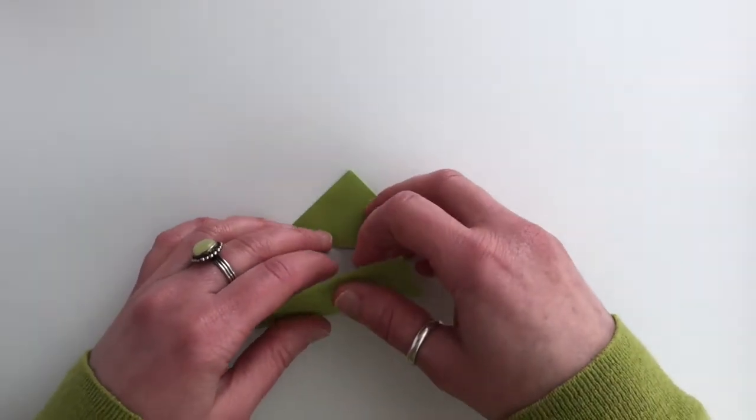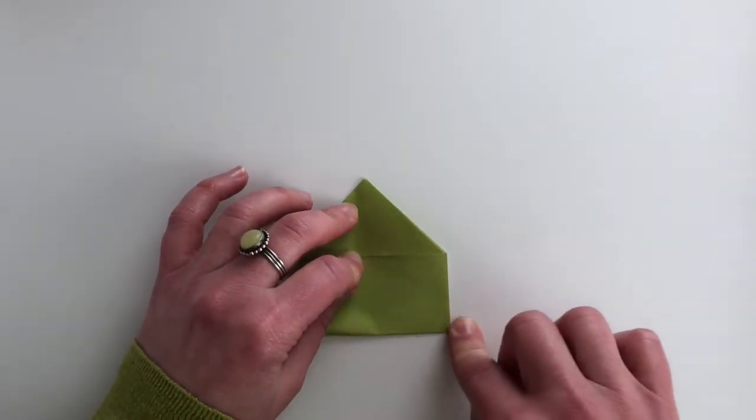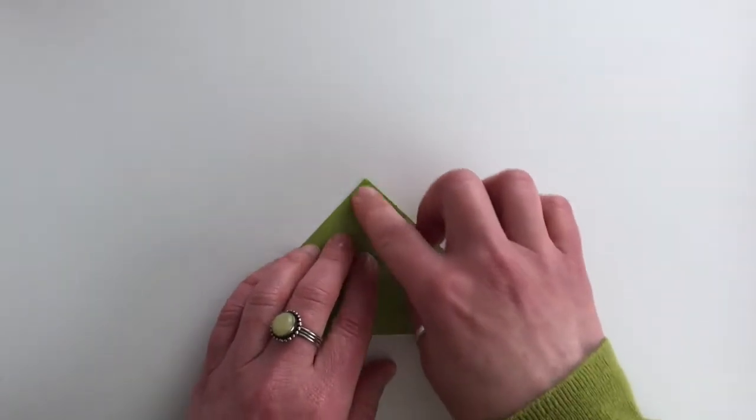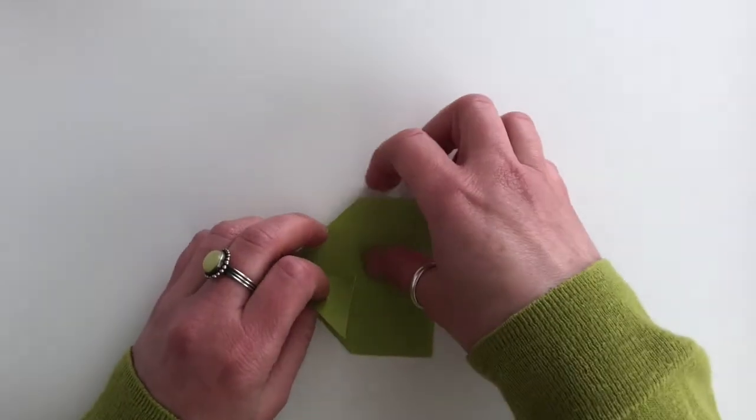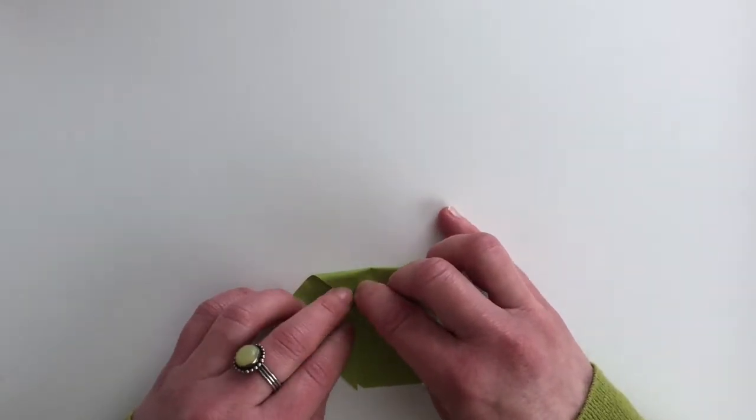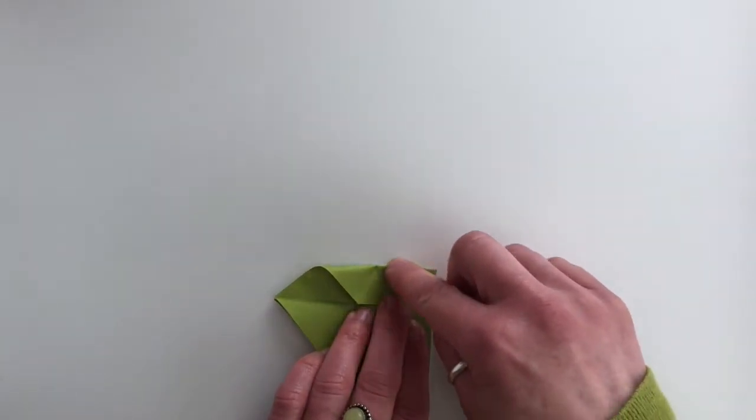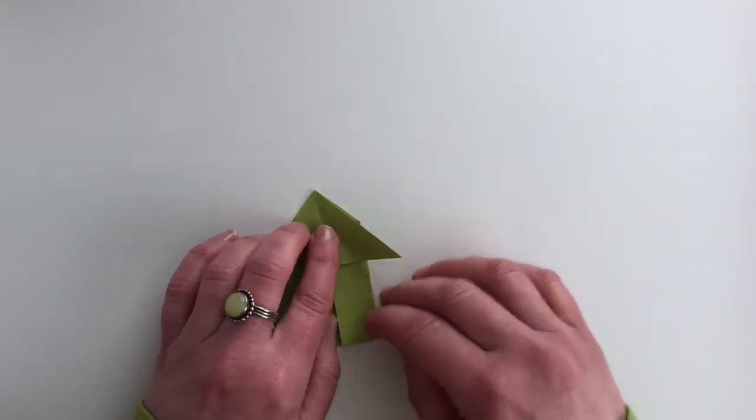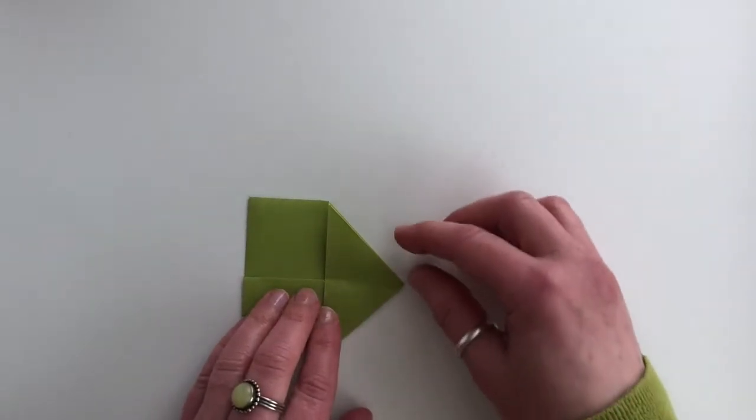Take the bottom edge and fold it up to meet this triangle. Now we're going to lift this side of the top triangle and fold this edge into the center, being careful to align this edge here. As we do very often in origami, we've done something on one side, so we're going to repeat that step on the other side.